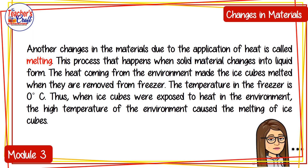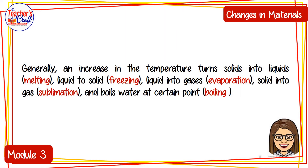Another change in materials is due to the application of heat: melting. This process happens when solid materials change into liquid form. The heat coming from the environment made the ice cubes melt when they were removed from the freezer. The temperature in the freezer is 0 degrees Celsius. When ice cubes were exposed to heat in the environment, the high temperature caused the melting. Generally, an increase in temperature turns solid into liquid (melting), liquid into solid (freezing), liquid to gas (evaporation), solid to gas (sublimation), and liquid to gas at a certain point (boiling).